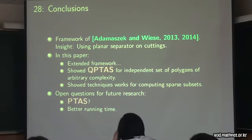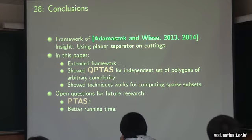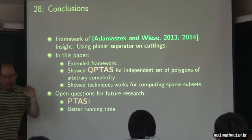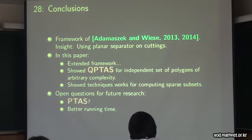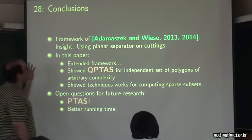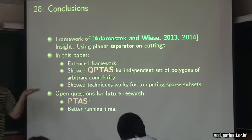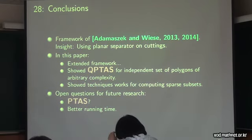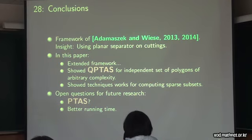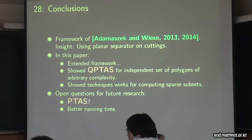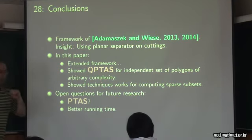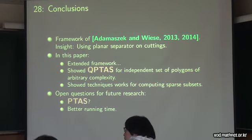In conclusion: we extended the framework of Adamczyk and Weiss to work for polygons of arbitrary complexity. The basic idea was to use planar separators on cuttings. We showed that cuttings exist in this general setting, and that the algorithm works not just for independent set but for more general sparse families — any property that is hereditary, mergeable, sparse, and checkable. The natural open problem is to find a PTAS — improve the running time to polynomial time — though how to do that is completely open. Thank you.